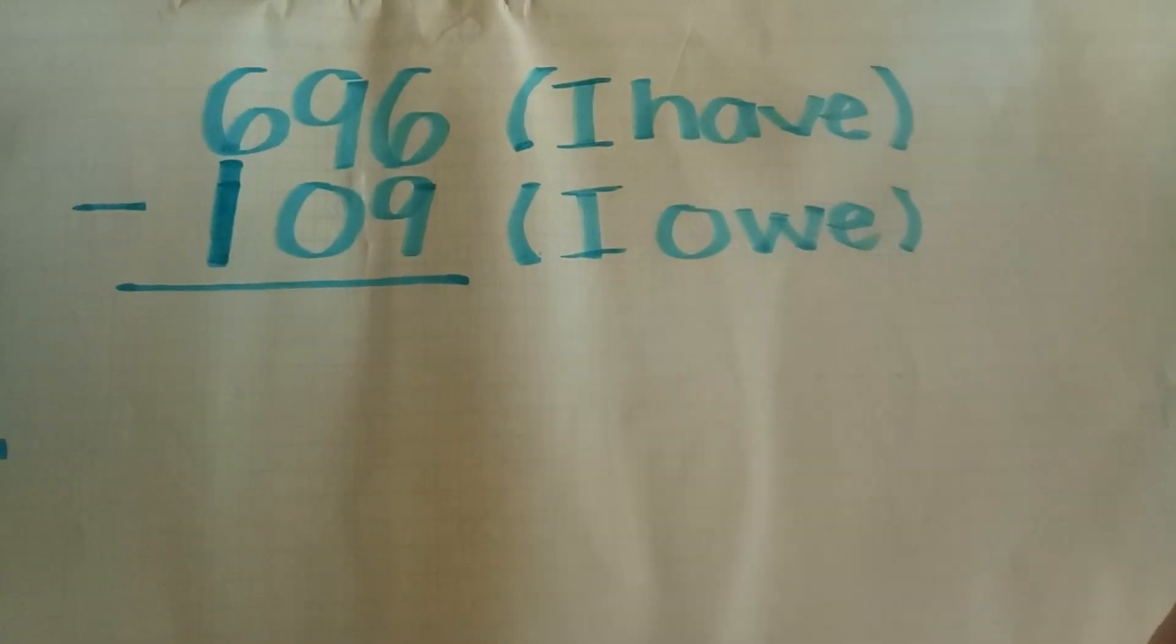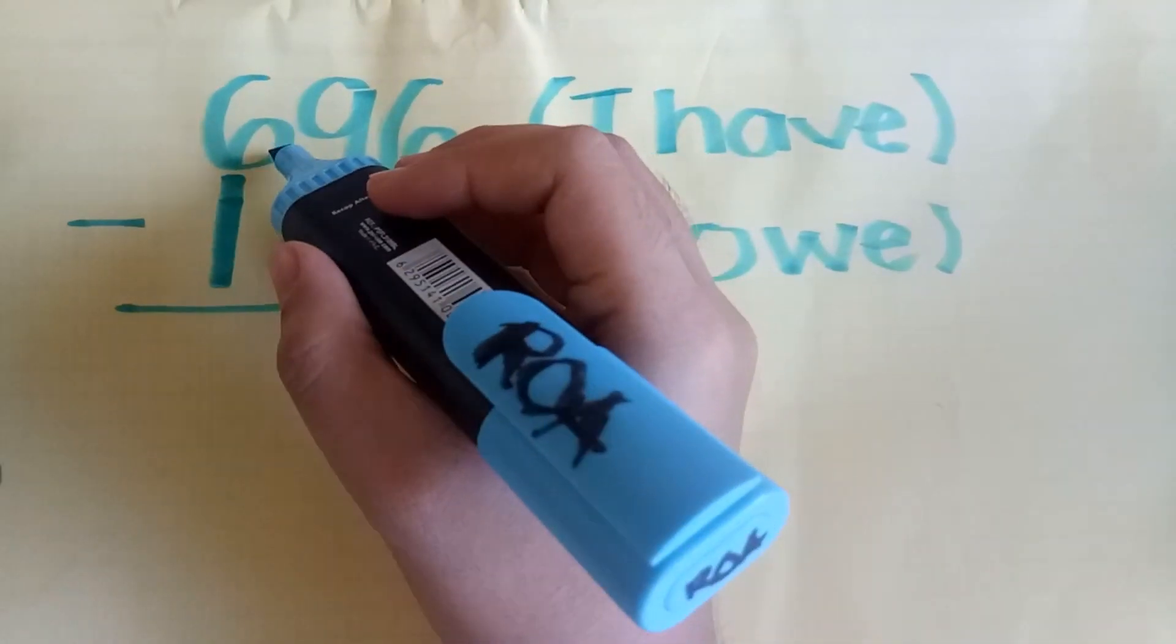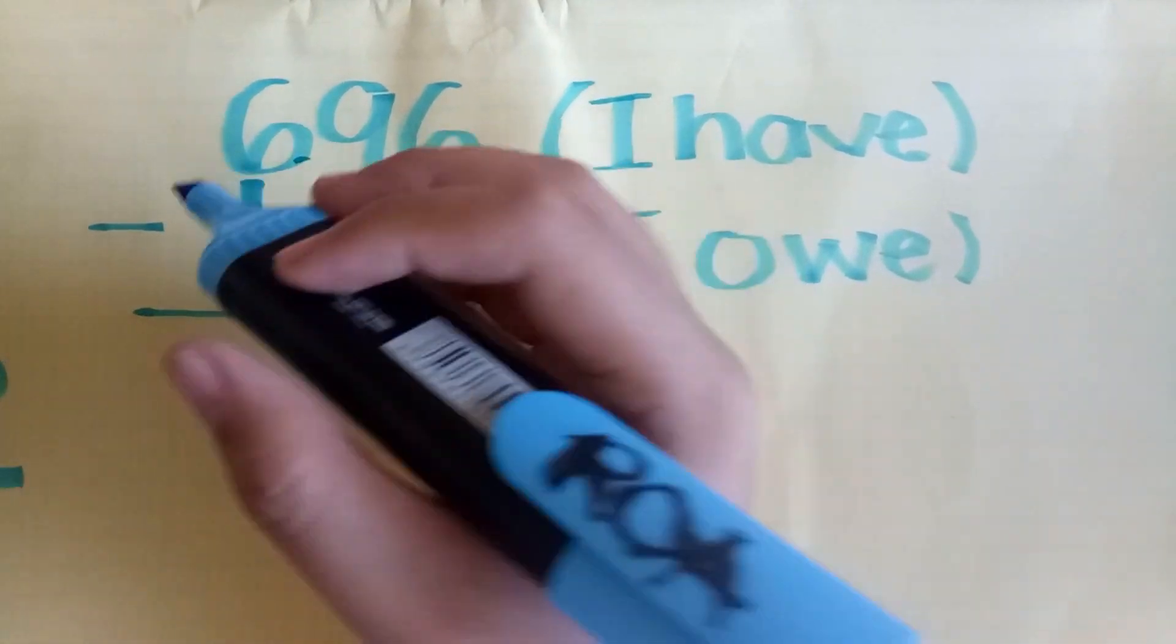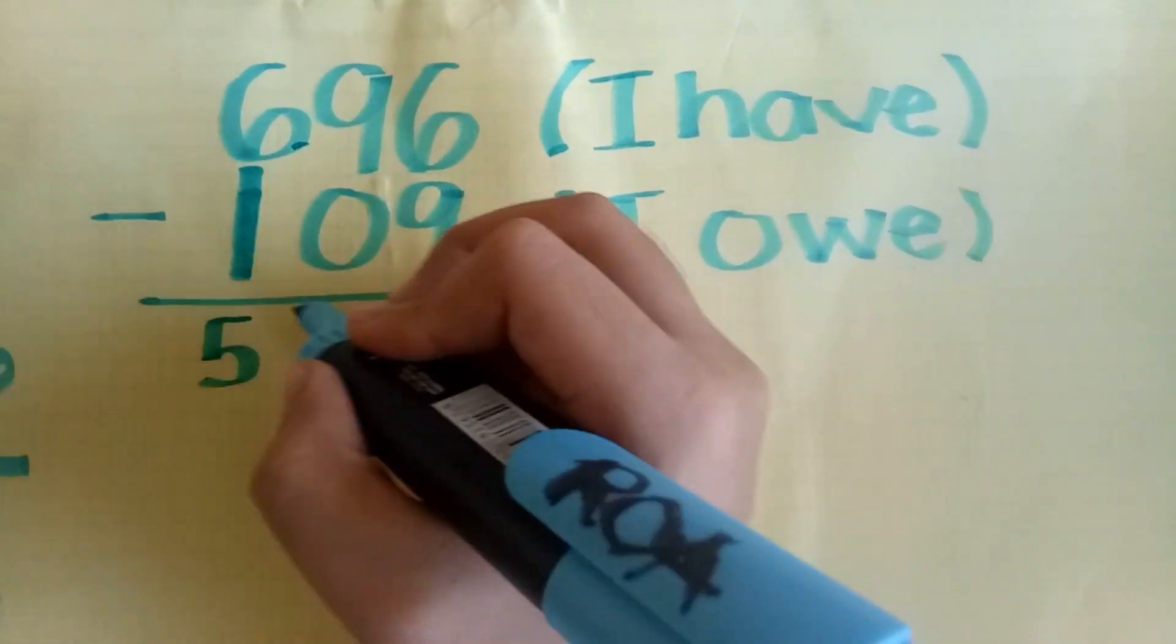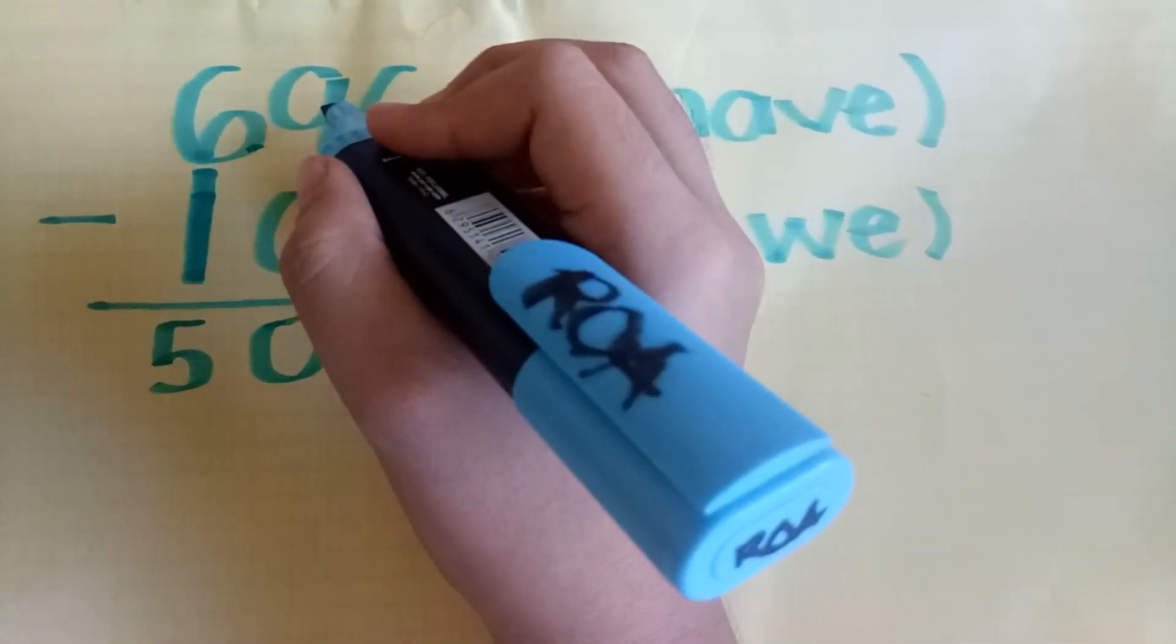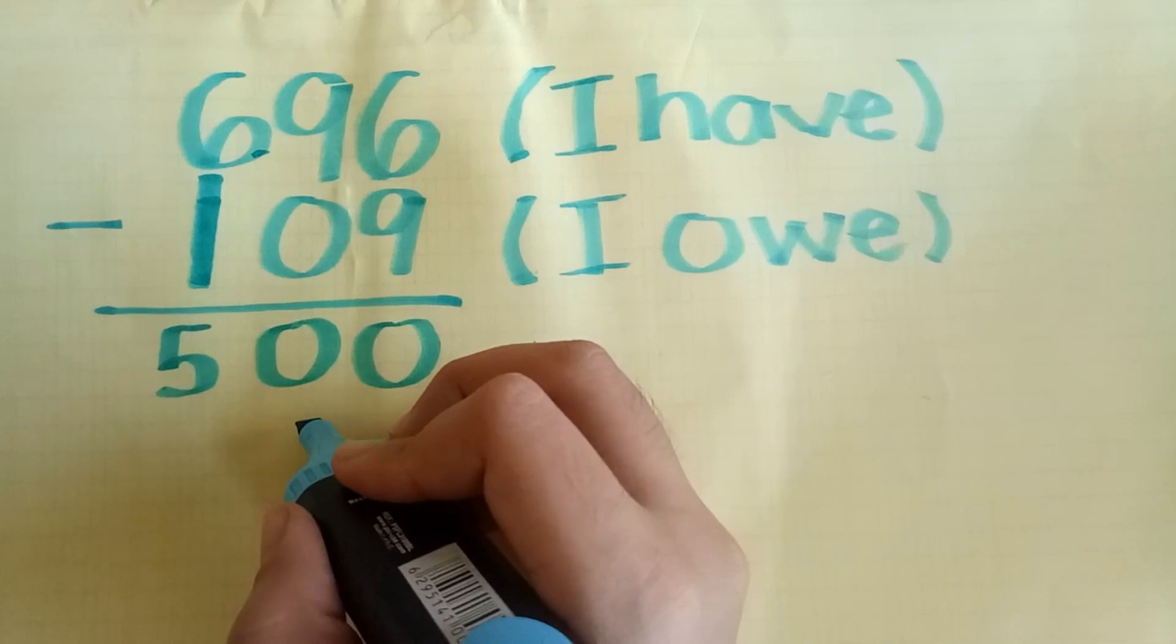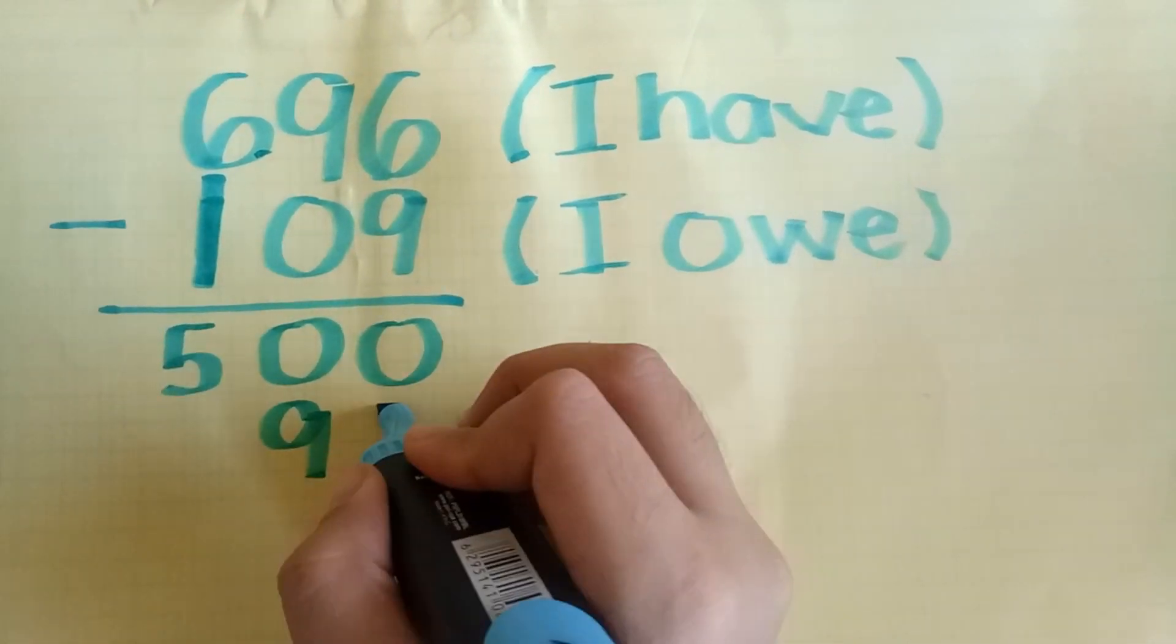In subtraction, we will use the I have and the I owe approach. Six hundred ninety-six minus one hundred nine. I have six hundreds, I owe one hundred, I still have five hundred. I have nine tens, I owe zero tens, I still have nine tens or ninety.